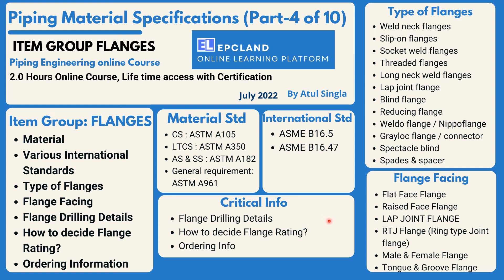We will look into critical information on flange dimensions, flange ratings, and ordering information — what a purchaser has to provide so that the manufacturer understands what flanges they are looking for. Then we will cover various types of flanges: weld neck, slip-on, socket weld, threaded, long neck, and lap joint — looking into each type's configuration, basic application, and why there are so many types of flanges.